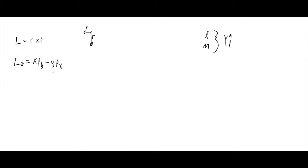The z-component of classical angular momentum is x·p_y minus y·p_x, and we can write similar expressions for the x and y directions. We then change these momentum quantities into quantum momentum operators, which look like minus i·ħ times the partial derivative with respect to the relevant direction. Plugging these quantum operators in for each of the p's gives us the fundamental commutation relations.